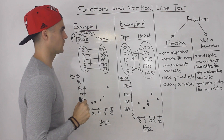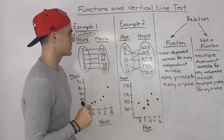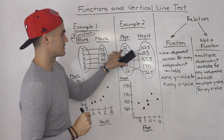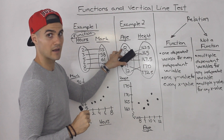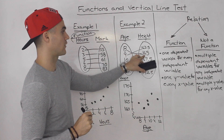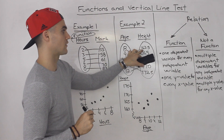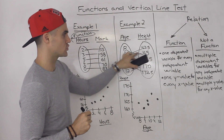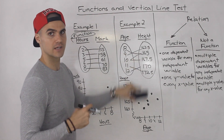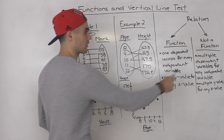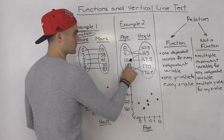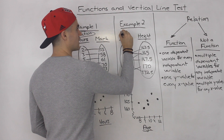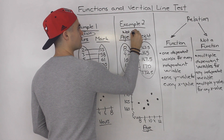What about example two? Notice in example two the eight — that independent variable — has one dependent variable. The nine has one dependent variable. But the ten has two dependent variables; it has multiple dependent variables. So just from this ten here we know that example two is not a function.